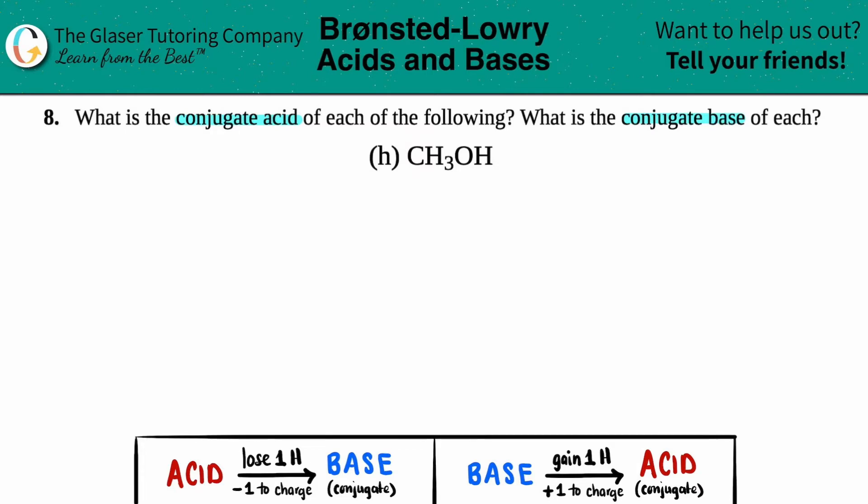If you can find a conjugate acid and a conjugate base from a single molecule, that means in some situations CH3OH will be acting as an acid, but in other situations CH3OH can act as a base. If a single molecule can act as both an acid and a base, we call these molecules amphiprotic or amphoteric. It's just a fancy way of saying a molecule can act as an acid and a base.